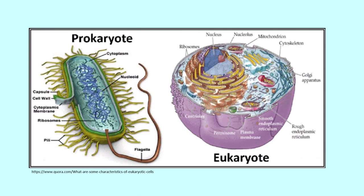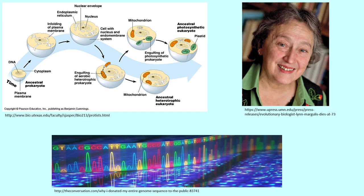Understanding the evolution of eukaryotic cellular complexity is one of the biggest challenges of modern biology. The current hypothesized process for this important evolutionary event is known as endosymbiosis. The endosymbiotic theory explains the origins of eukaryotic cellular organelles such as mitochondria and chloroplasts, and was greatly advanced in the 1960s by the work of Lynn Margulis. Over the last half century, the theory of eukaryotic evolution has advanced due to genome sequencing technologies becoming more available.